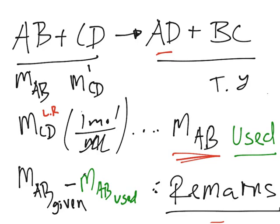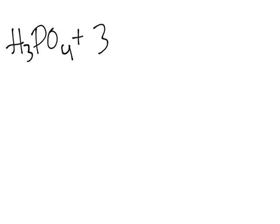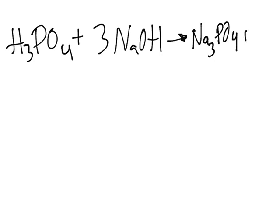Now let's use this knowledge and actually solve the problem. We have 17.82 grams of sodium hydroxide reacting with 15.4 grams of phosphoric acid to get sodium phosphate and water. They ask us how many grams of sodium phosphate are formed, and how many grams of excess reactant are left. The chemical equation is: H3PO4 + NaOH → Na3PO4 + H2O. We must first make sure it is balanced.